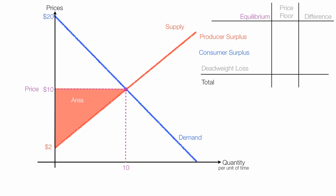The length of this side of the triangle is 8, or 10 minus 2. The length of the other side of the triangle is 10, just this distance right here. The area of this triangle is 1 half base times height. It's 1 half times 10 times 8, and this equals 40. So producer surplus before a price floor is 40.